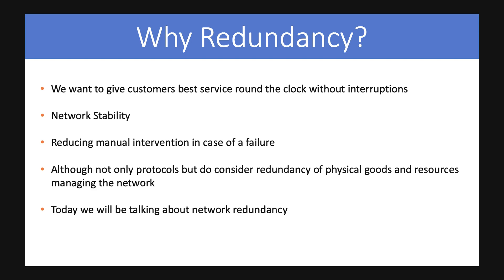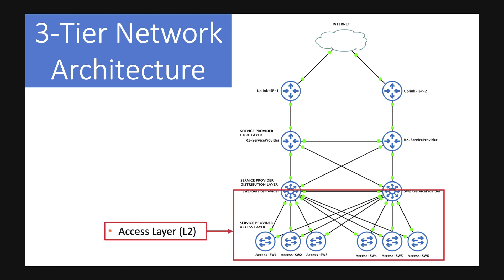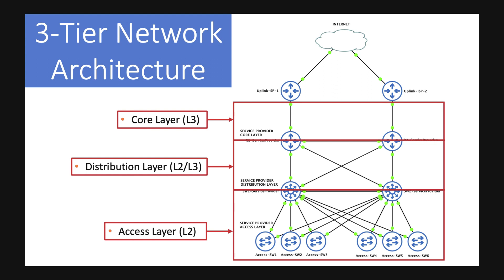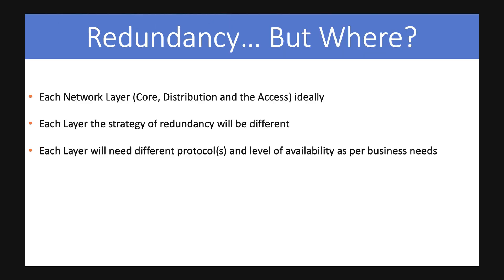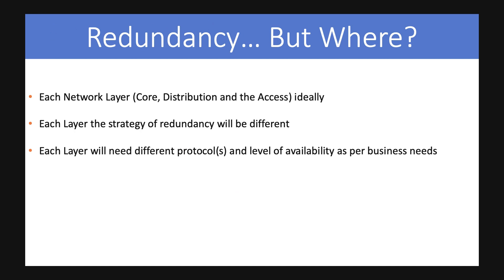This is what a three-tier network architecture looks like. We have our access layer at the bottom, which connects directly to the customer, served through the distribution layer. On top we have the core, where interconnection to transit providers and content peering providers happens. These redundancies have to be built on each layer — the core, the distribution, and the access layer. Some people only build redundancy on the core and distribution, having multiple WANs and distribution points, but what is lacking is total network redundancy across all layers.